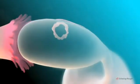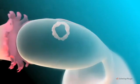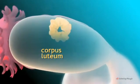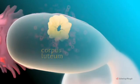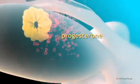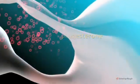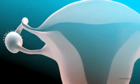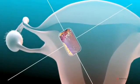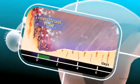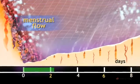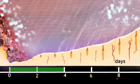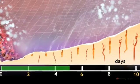Meanwhile, after the follicle ruptures, it is converted into this yellowish body known as the corpus luteum. Cells of the corpus luteum secrete the hormone progesterone, which brings about important changes in the lining of the uterus, preparing it for possible pregnancy. The lining of the uterus, known as the endometrium, undergoes changes in response to hormone levels during the cycle.